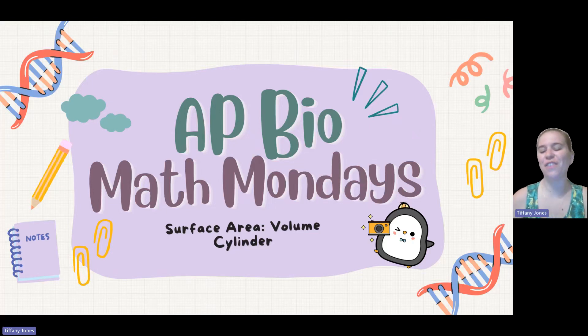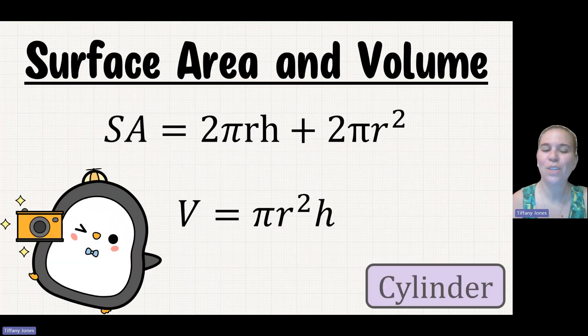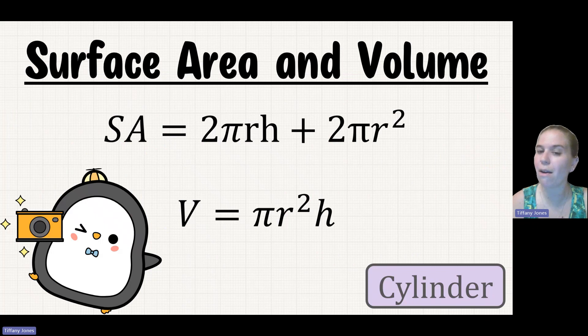What's up, baby penguin? It's going to be like a surface area to volume ratio, so we look at the cylinder. Our surface area is going to be 2πrh + 2πr². And our volume is going to be πr²h.